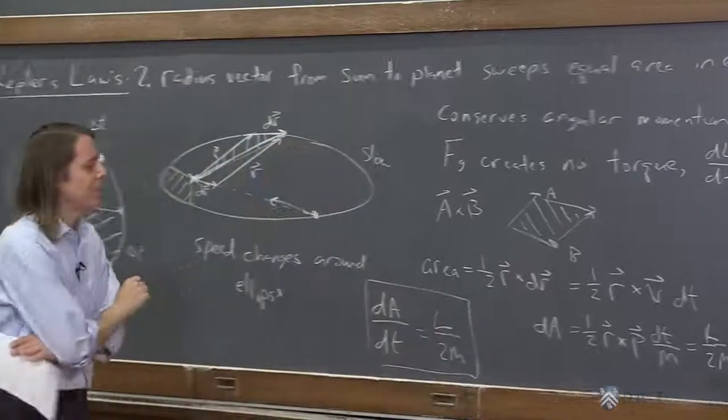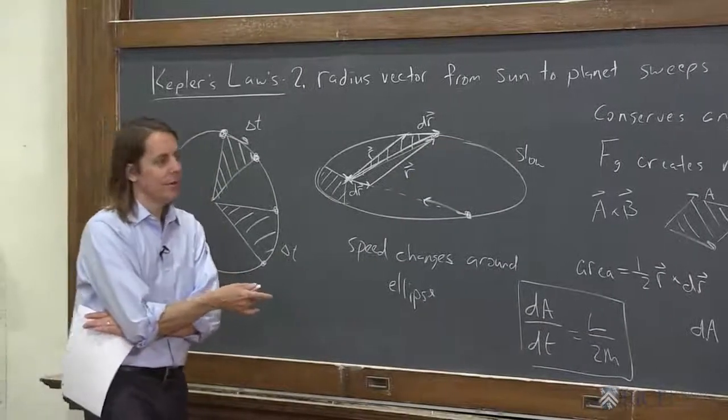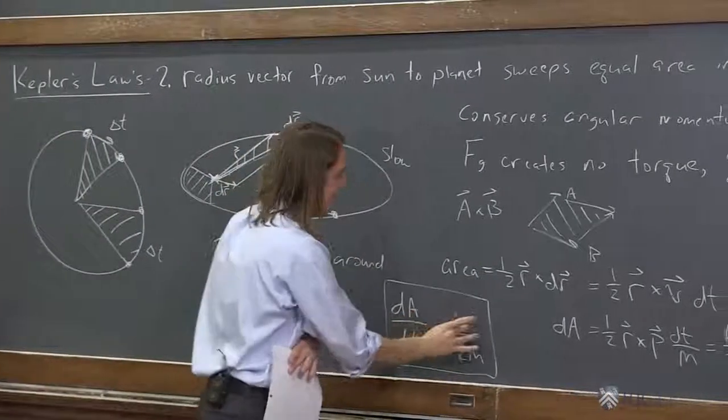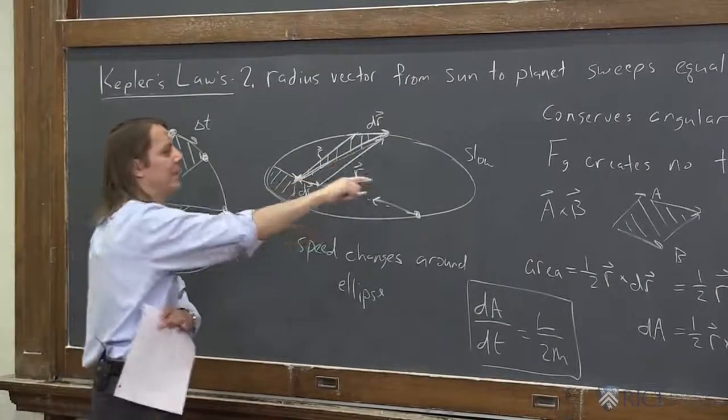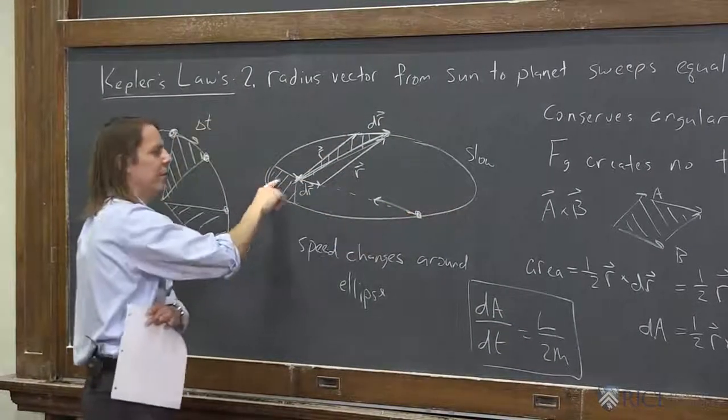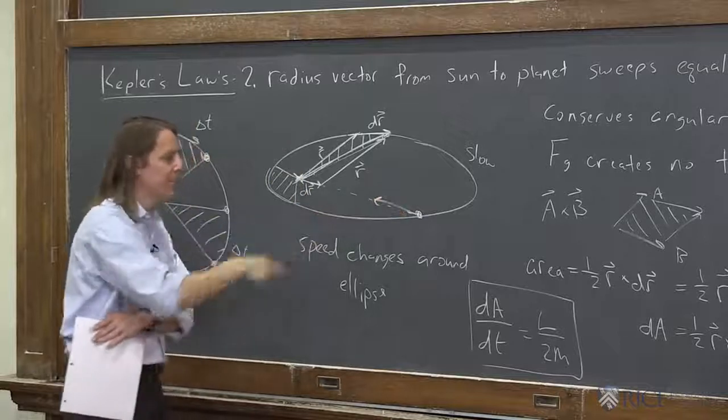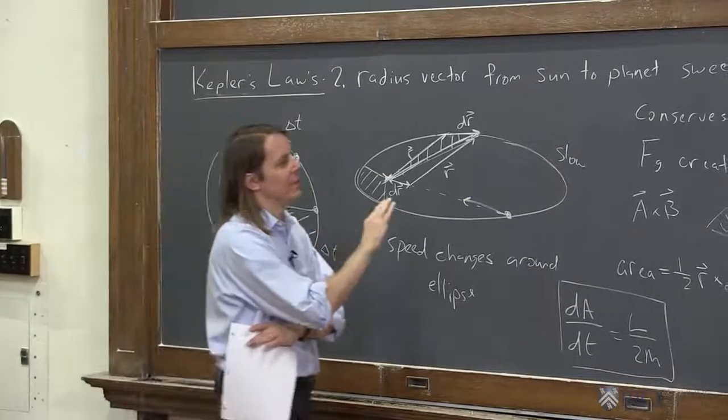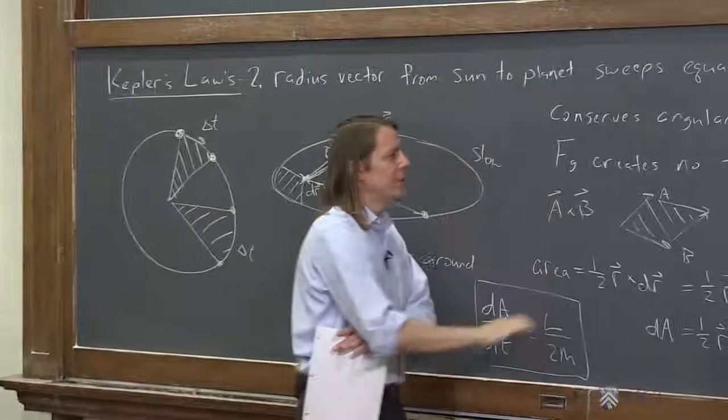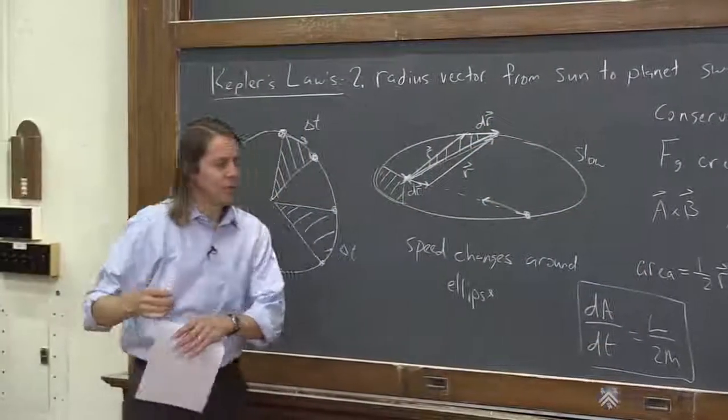And we know that the angular momentum is constant, because there's no external torque. So this dA dt is constant. So then you can do some geometry to figure out how fast is it going here, how fast is it going here, what's the ratio that it speeds up based on the eccentricity, et cetera. But his basic idea was very closely related to conservation of angular momentum. He just didn't know what that was yet.